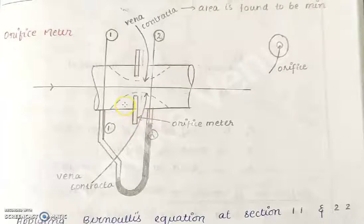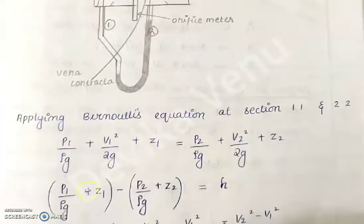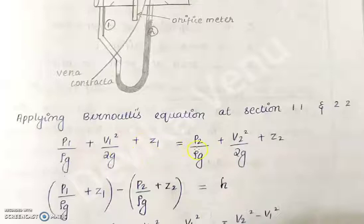Now applying Bernoulli's equation between section 1 and section 2, the equation is: p1/ρg + v1²/2g + z1 = p2/ρg + v2²/2g + z2.